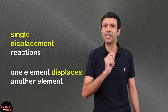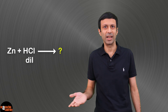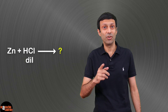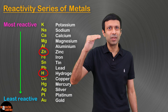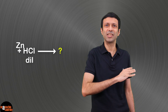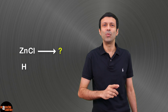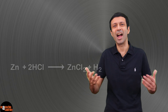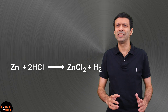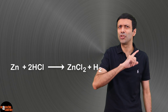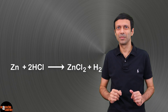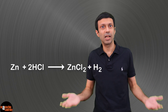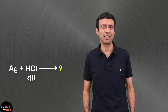For example, what will be the reaction when Zinc reacts with dilute hydrochloric acid? In the reactivity series, Zinc is above Hydrogen, so Zinc will displace Hydrogen in the acid and we'll get Zinc chloride and Hydrogen gas — basically Zinc tells Hydrogen to get out and displaces it. Now, what will happen if Silver reacts with dilute hydrochloric acid?